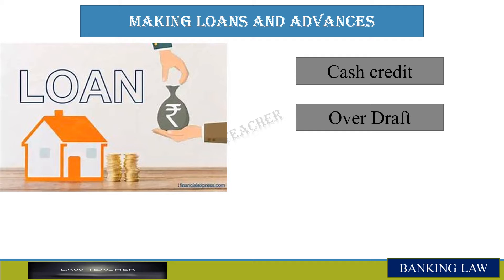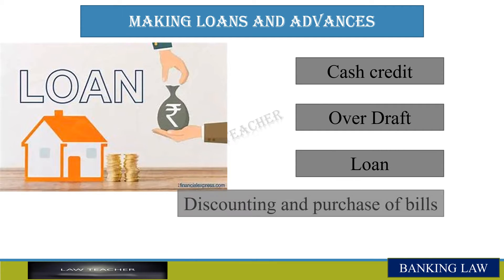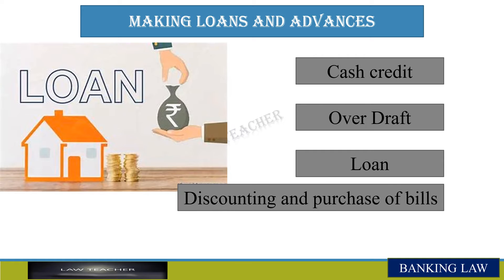The first way is cash credit. Businessmen generally need regular loans, and therefore it may be inconvenient for them to make a fresh agreement every time. Thus, they make an agreement for an anticipated certain amount required in a year. Such amount is not withdrawn as a whole at one time; the customer withdraws only such amount as required at a time. Interest is charged only on the amount withdrawn. Cash credit is generally allowed on securities only.